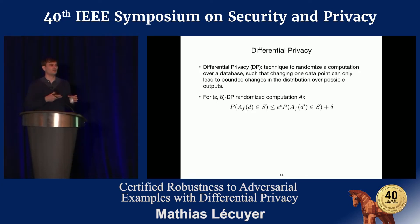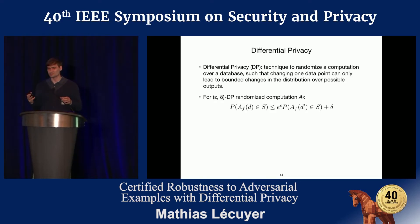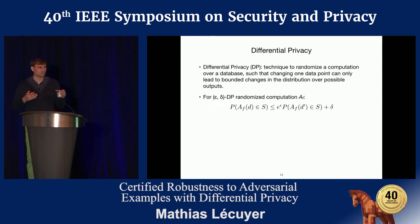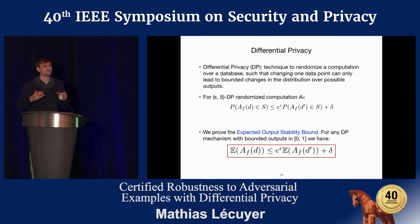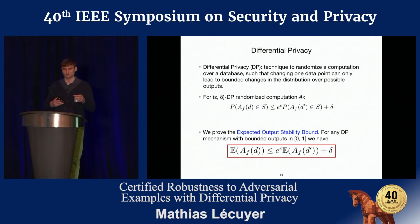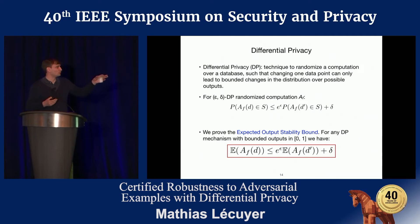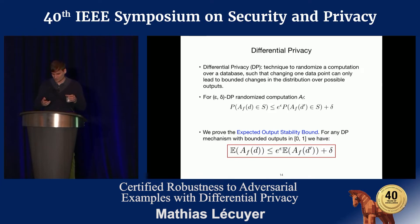Is that enough to prove robustness for deep neural net predictions? Not quite — we have a randomized mechanism giving a guarantee on the probability, but that's not quite what we want. However, for a differentially private mechanism with bounded outputs between 0 and 1, like the scores given by neural nets, we can prove that the expected score also follows the same bounds. This is what we use to bound how much scores can change under arbitrary changes to the inputs.